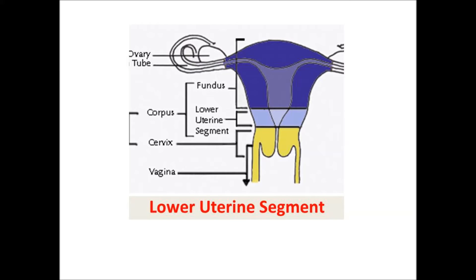The lower uterine segment forms during the third trimester in preparation for the descent and delivery of the baby, undergoing continuous growth and stretching. When this segment is stretched, the blood vessels within the placenta tear, resulting in bleeding. This stretching of the lower uterine segment causing tearing of the blood vessels is the pathophysiology of placenta previa.